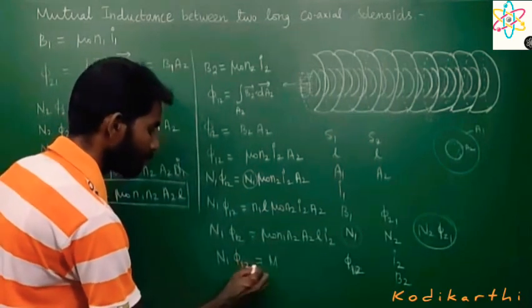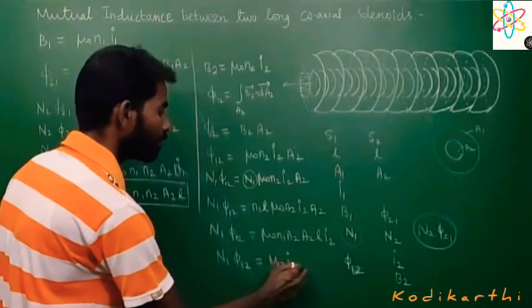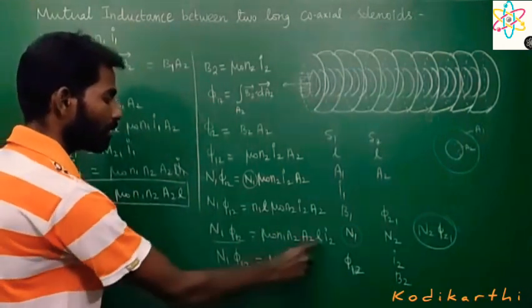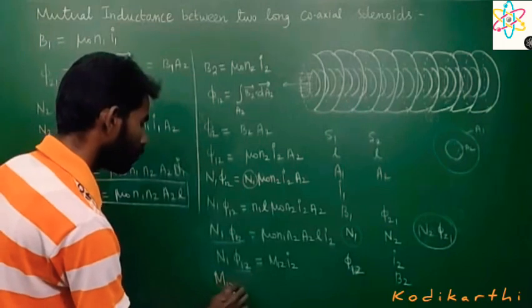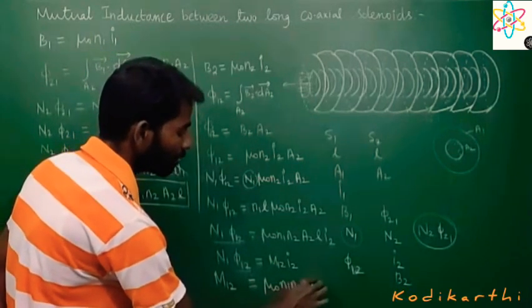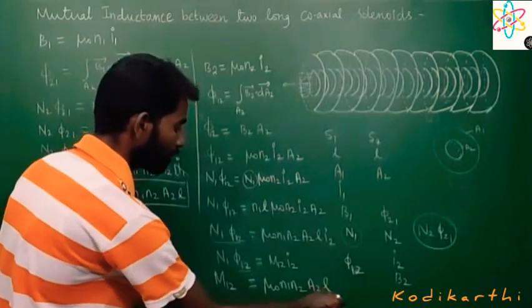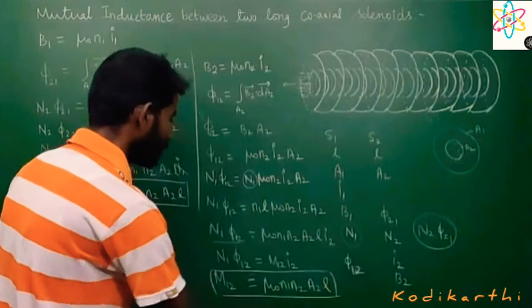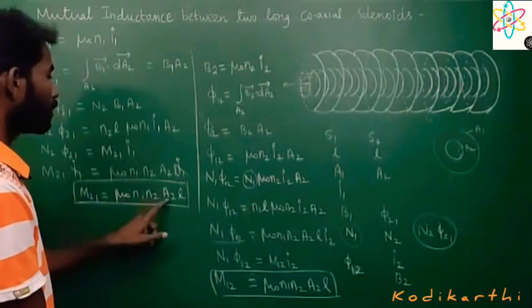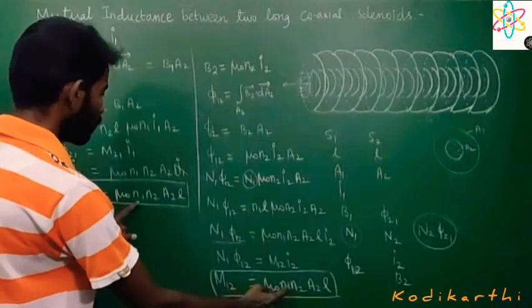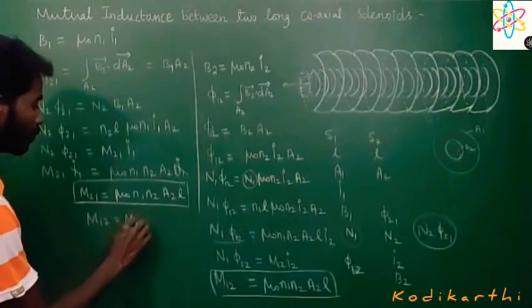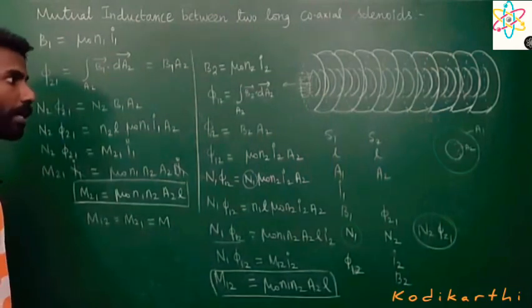M₁₂ equals μ₀n₁n₂A₁/L. I₂ cancels out. So M₁₂ is equal to μ₀n₁n₂A₁/L. From the equations, we see that M₁₂ equals M₂₁.